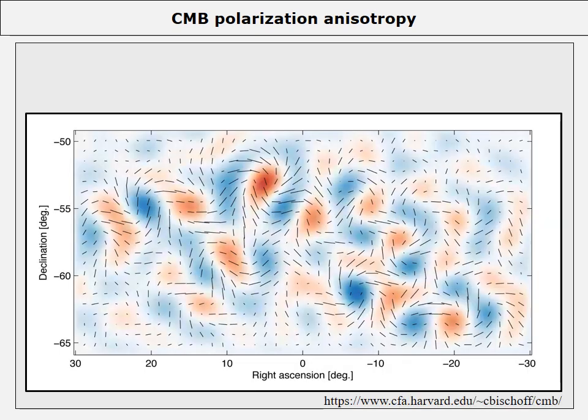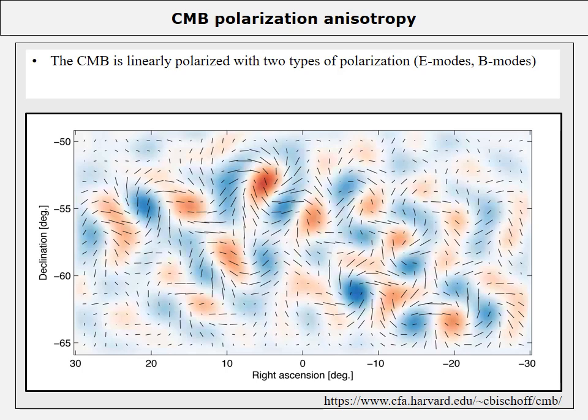Interestingly, the CMB also displays polarization anomalies. The color indicates temperature fluctuations and the vector field shows the polarization of the CMB. The CMB is linearly polarized with two types of polarization: the so-called E-modes and B-modes. As shown in the picture displaying just B-modes, the polarization anomalies and CMB temperature anisotropies are of the same extent and mutually correlate.